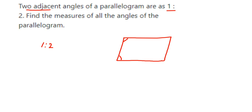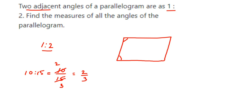Whenever a ratio is given, we know that ratios are always written in reduced form. For example, suppose I have 10 is to 15. In fractional form, 10 by 15 — cancelling by 5, we get 2 by 3. So the ratio is 2 is to 3. Notice that 10 = 5×2 and 15 = 5×3, so 5 is the common factor here.